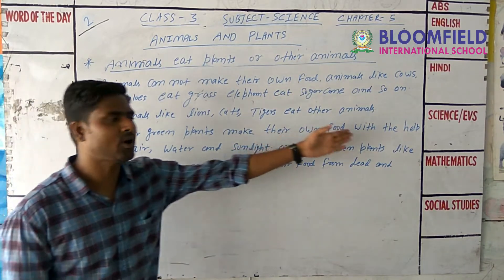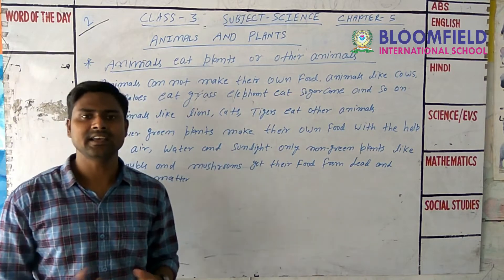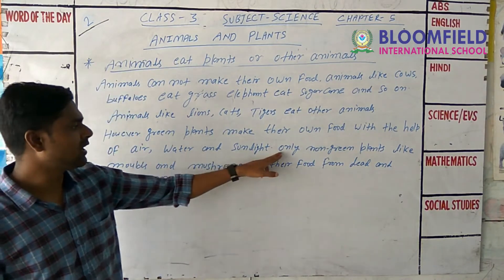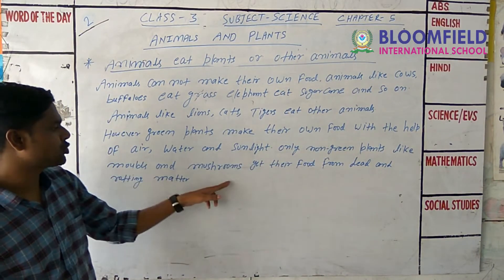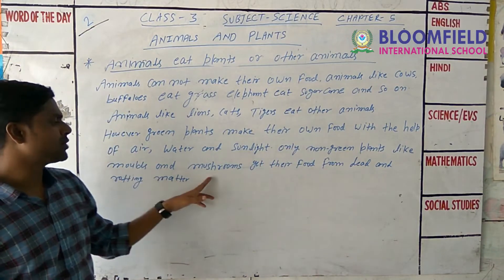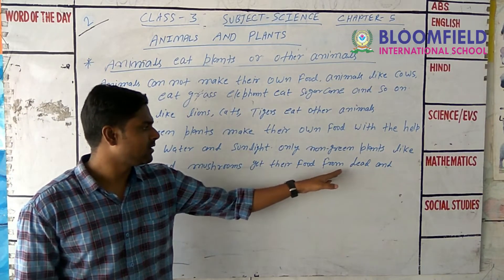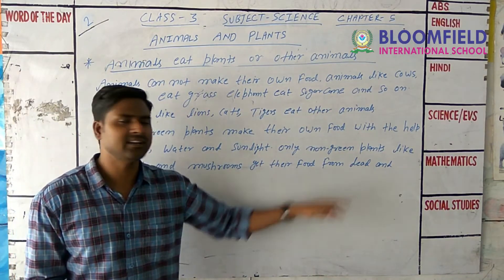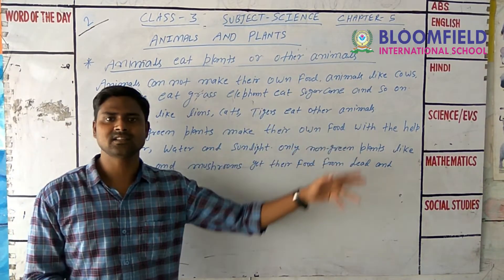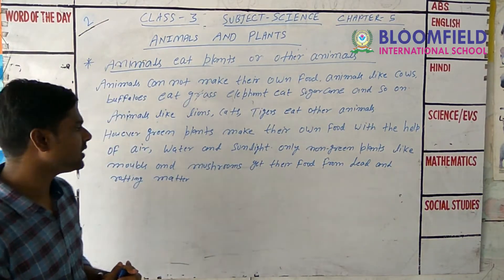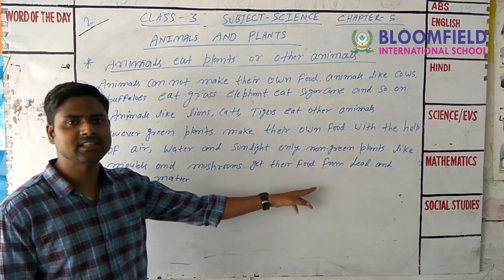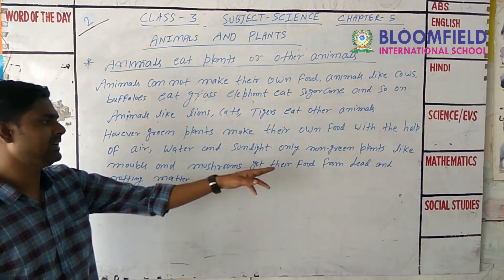Green plants make their own food with the help of air, water, and sunlight. Non-green plants like molds and mushrooms get their food from dead and rotting matter.